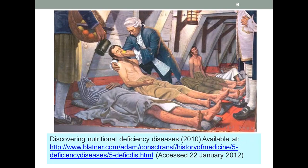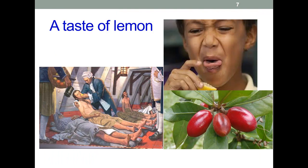This is a nice image of a scurvy dog being force-fed a lemon, from a good online essay reviewing many of the deficiency diseases — well worth having a look at. The poor sailor probably struggled a bit with eating a lemon. The secret is to temporarily modify the structure of your taste receptors for bitterness using the extract of the miracle berry. It really does work — you'd be surprised.